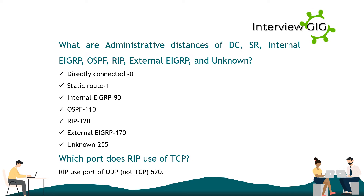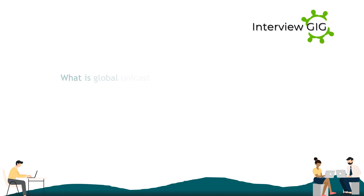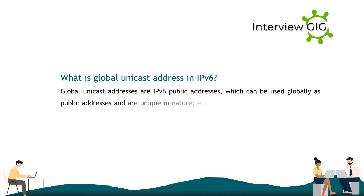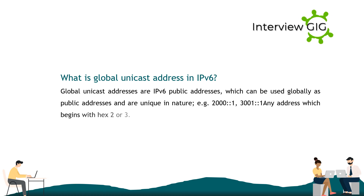Which port does RIP use? RIP uses port 520 of UDP, not TCP. What is a global unicast address in IPv6? Global unicast addresses are IPv6 public addresses which can be used globally and are unique in nature. For example: 2000::1, 3001::1 — any address which begins with hex 2 or 3.